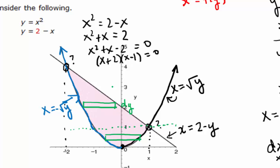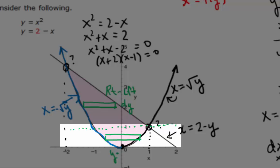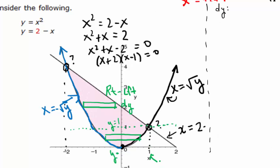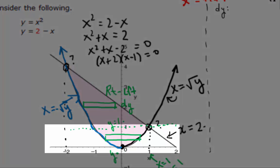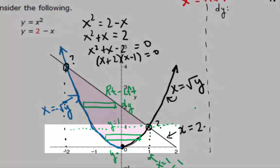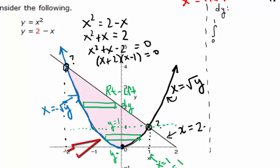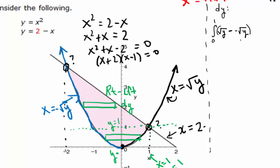We'll still use right minus left. Let's start with the piece that goes from y equals 0 to what looks like y equals 1. Let's confirm that — plugging in x equals 1, we get y equals 1 as well. So our y values for this bottom piece go from 0 to 1. Integral from 0 to 1: the right side is the square root of y, and what are we subtracting — the left side — negative square root of y. That's in blue here, and it's a dy, of course.